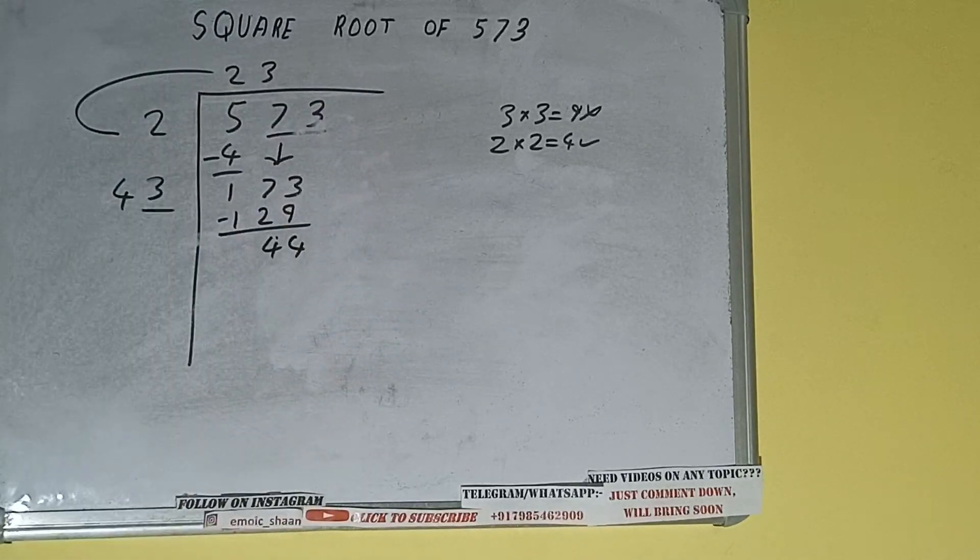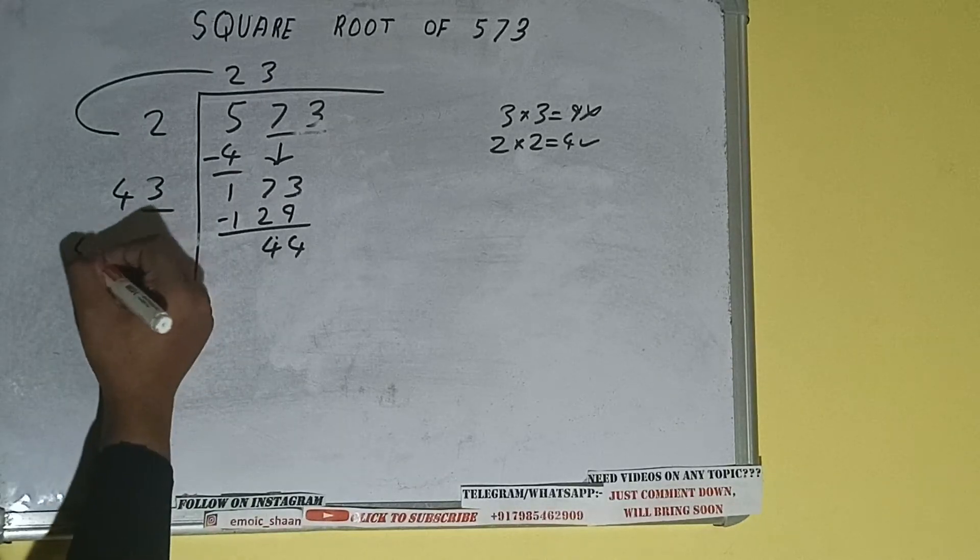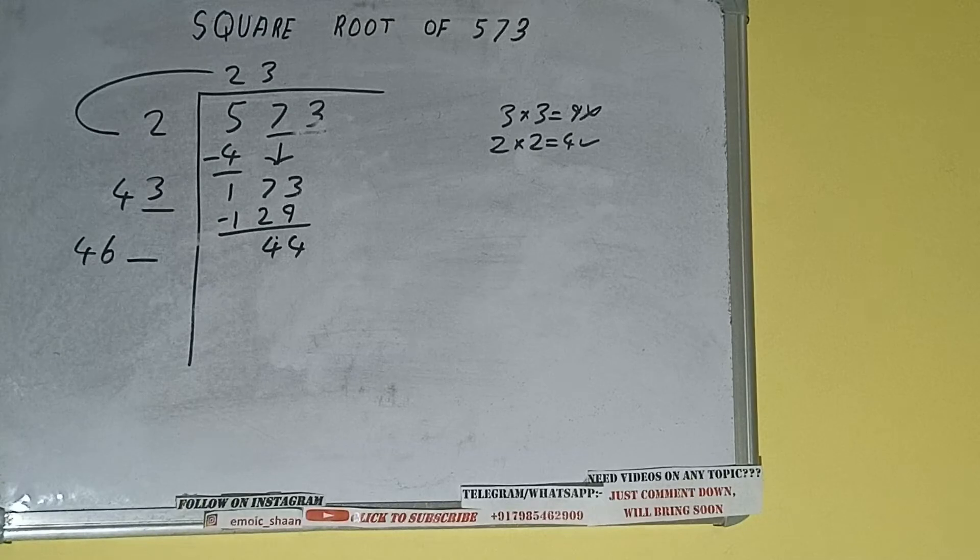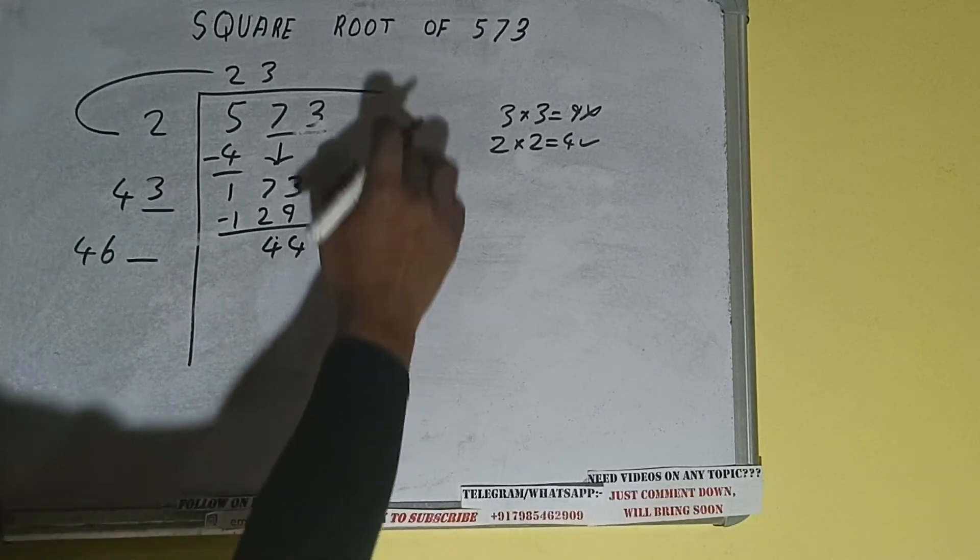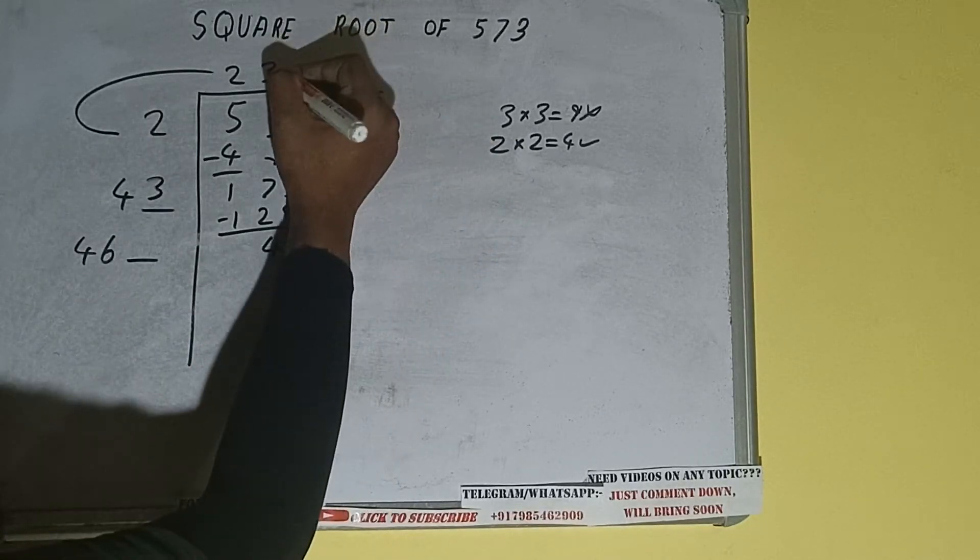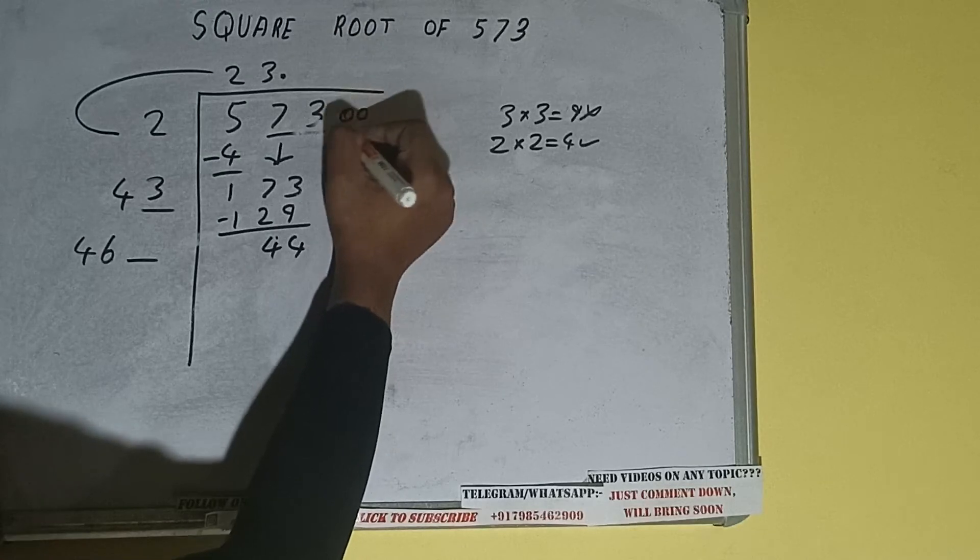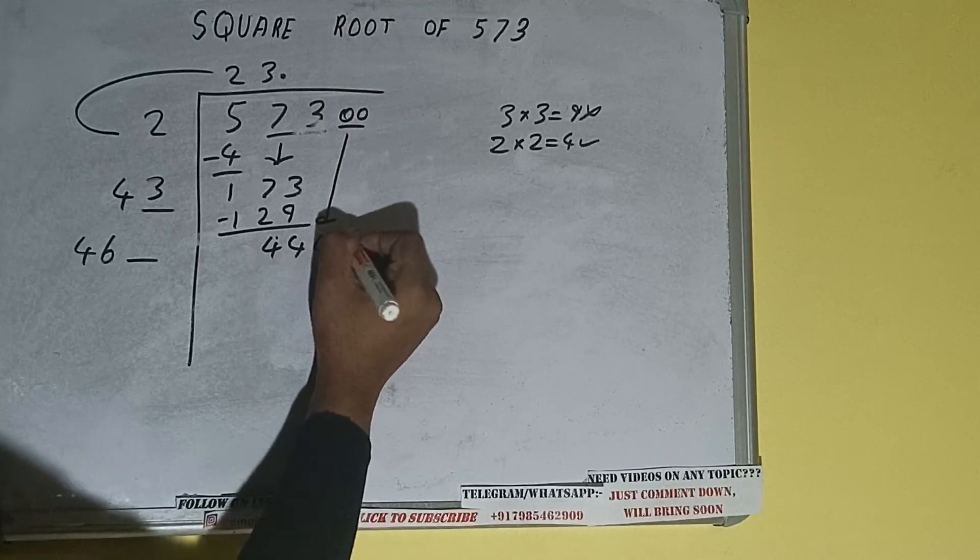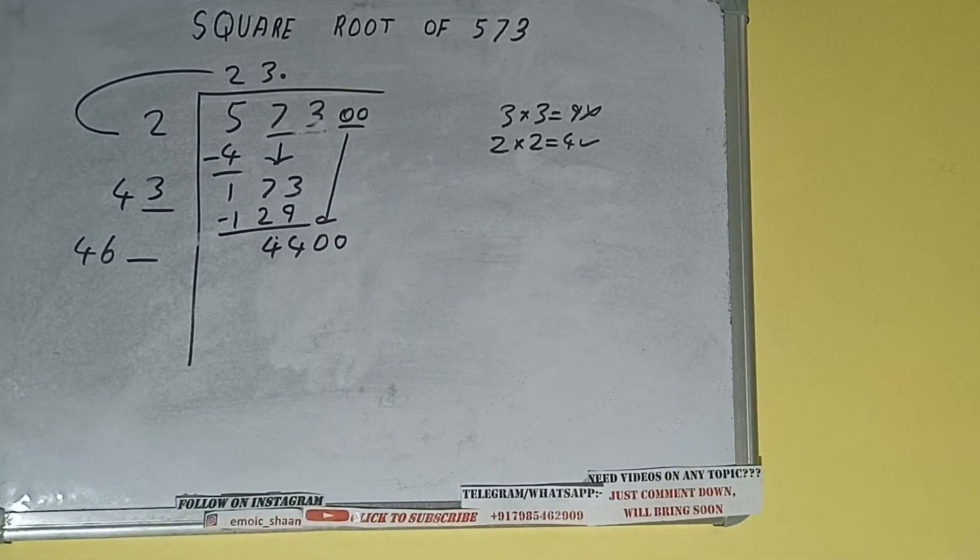Now 43 into 3 we did, so add both. 43 plus 3 will be 46 and one digit extra. And this number we need to make it big. But we don't have more pairs, so we'll put a decimal. Once we put decimal, we can bring a pair of zeros down and it will be 4400.